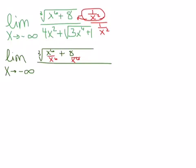Okay, now when we put this 1 over x to the 6th through the denominator, at first not much changes. So let's see, we've got 4x squared plus the square root of 3x to the 4th plus 1. And when I distribute the 1 over x squared through, nothing changes out here, so this will just be divided by x squared.